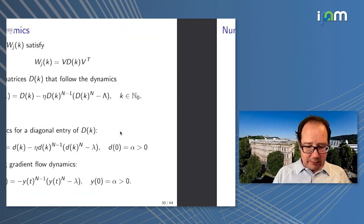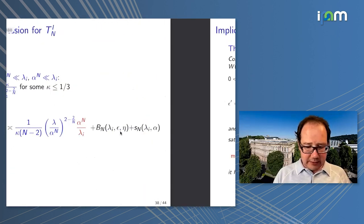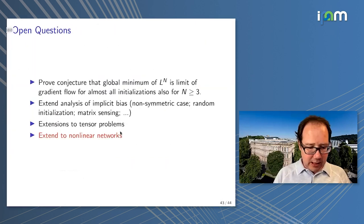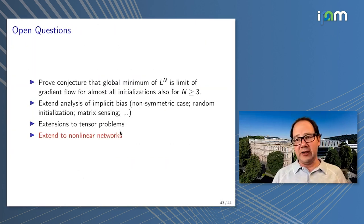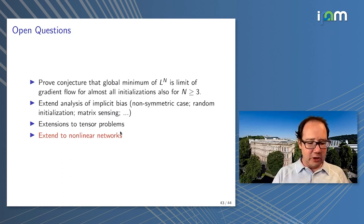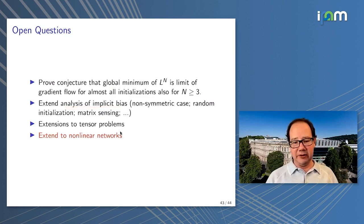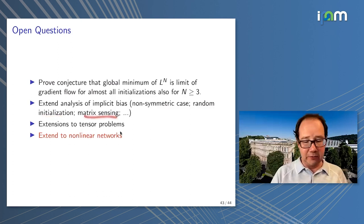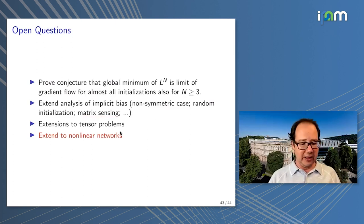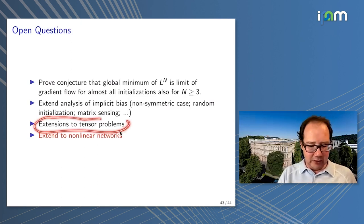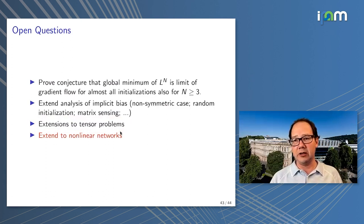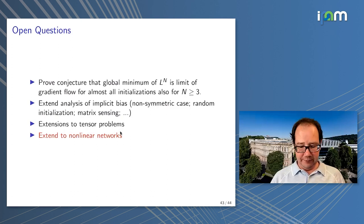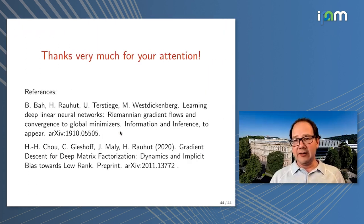There are many open questions: we want to extend the analysis of implicit bias beyond the non-symmetric case and beyond identical initialization, proving something for random initialization and for the original matrix sensing problem. What would be very interesting is to look at this also for tensor problems and see whether similar phenomena happen. And of course the holy grail is to extend this to non-linear networks. Thanks very much for listening.